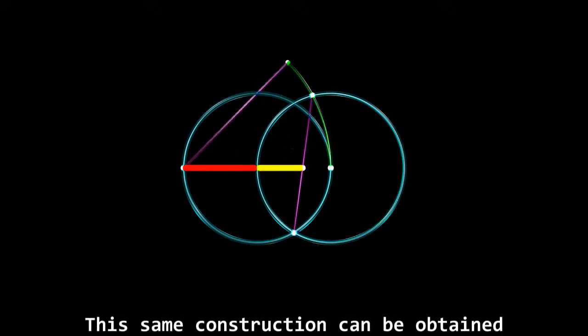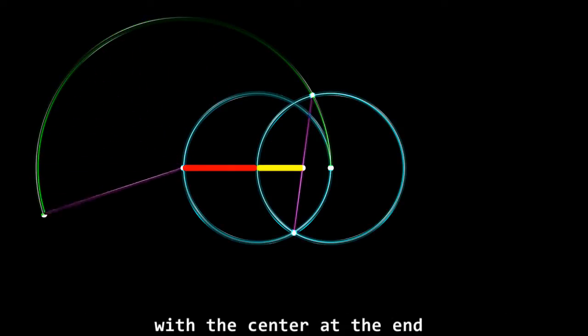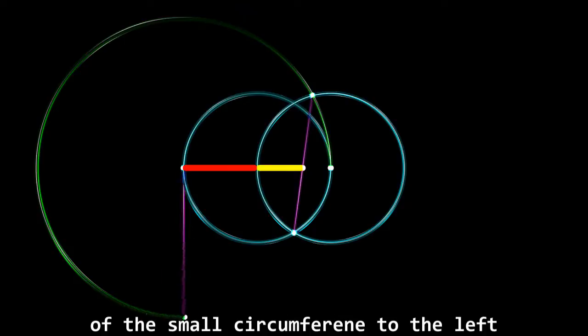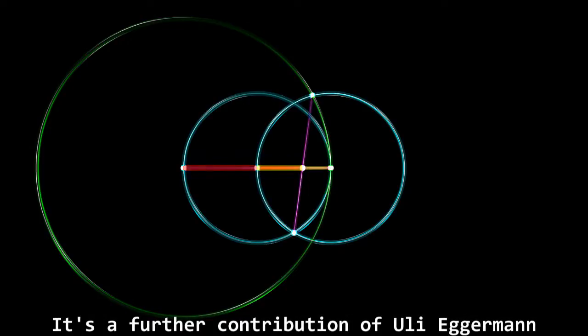This same construction can be obtained by drawing a circumference of twice the radius with the center at the end of a small circumference to the left. It is a further contribution by Uli Egerman.